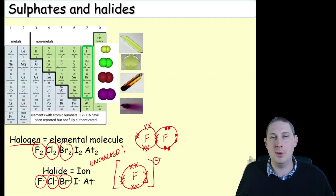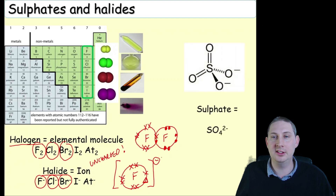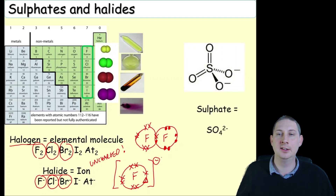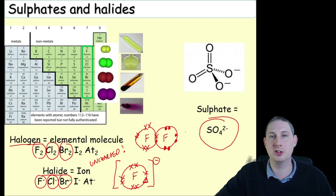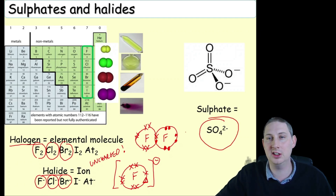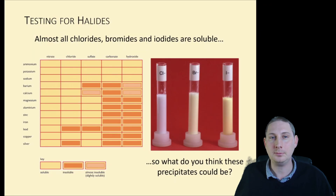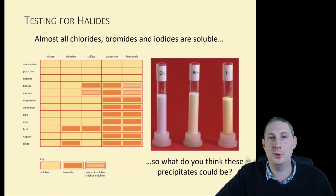The other ion we're going to look at is sulfate: SO₄²⁻. If you haven't learnt that formula and charge by now, you really need to do that. We'll start off with testing for halides.